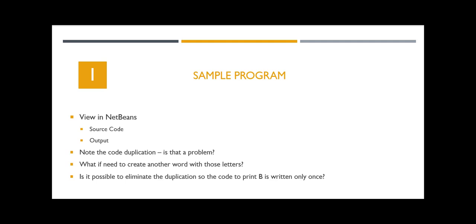What if we wanted to create another word with more letters? What we're going to do is move these into methods. For example, on the next slide I'm going to show the printB method — you write it once, and you can print 100 Bs if you want to without having to duplicate the code.